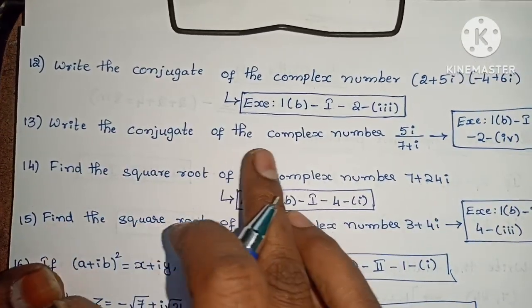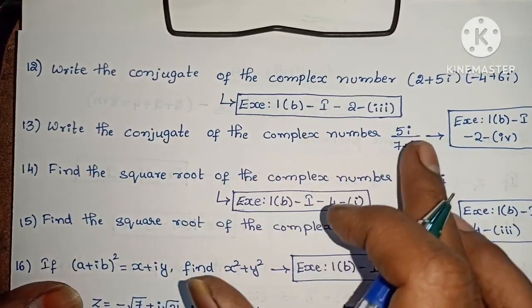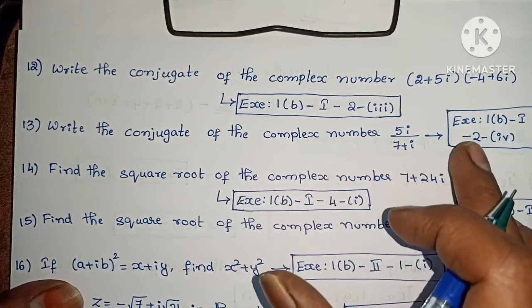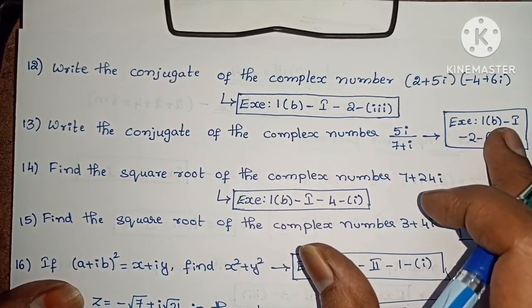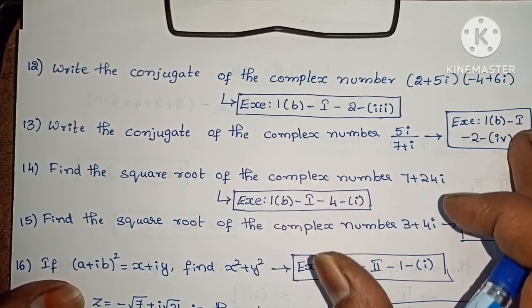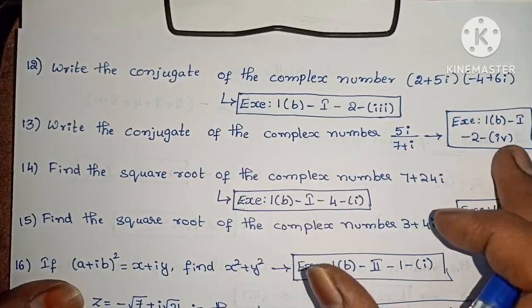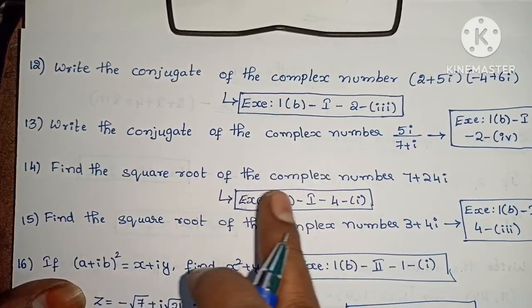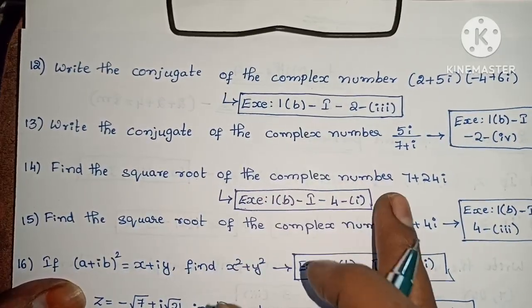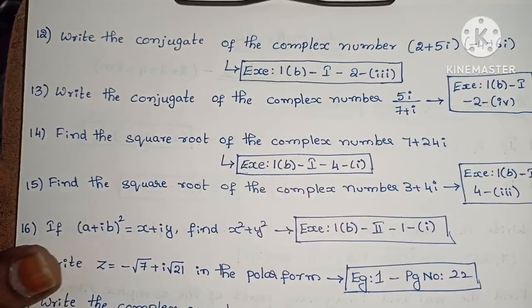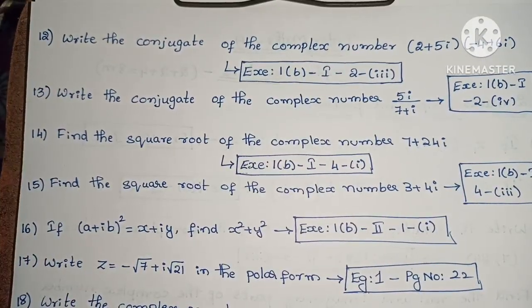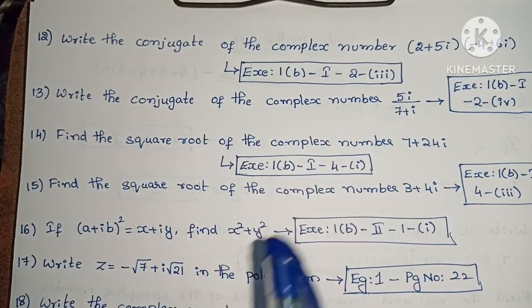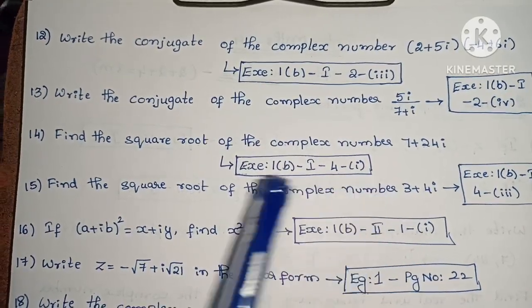Next, write the conjugate of the complex number 5i / (7 + i). Exercise 1 below, first roman, second, fourth one. Next, find the square root of the complex number 7 plus 24i. Exercise 1 below, first roman, fourth, first one.